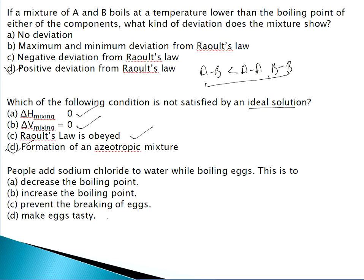Question 15: People add sodium chloride to water while boiling eggs. This is done to increase the boiling point and to seal cracking when the egg boils. So the correct answer is to increase the boiling point.